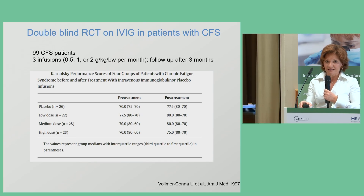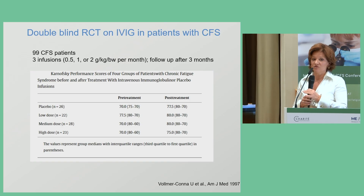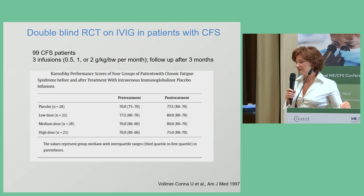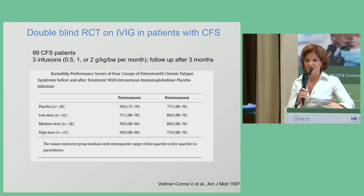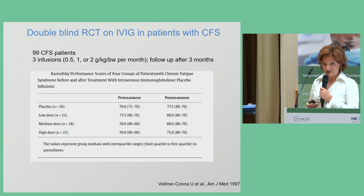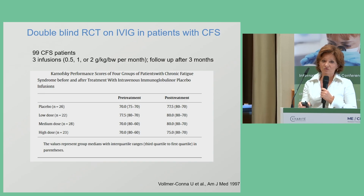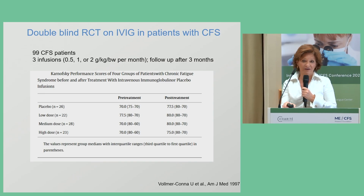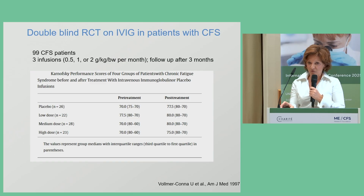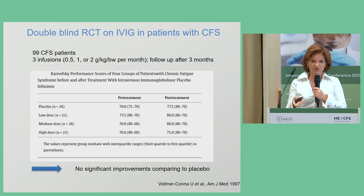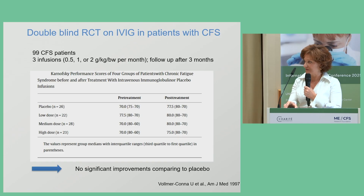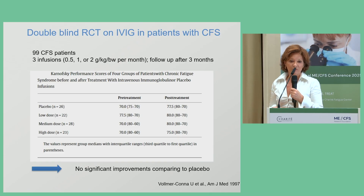Seven years later, the same group tried to titrate the level of immunoglobulin therapy. They applied different doses — 0.5, 1 gram, and 2 grams per kilogram body weight per month — and performed follow-up looking at Karnofsky performance, fatigue, and cognitive performance. Unfortunately, all groups improved but the placebo group also improved, so they could not show statistical significance for immunoglobulins.